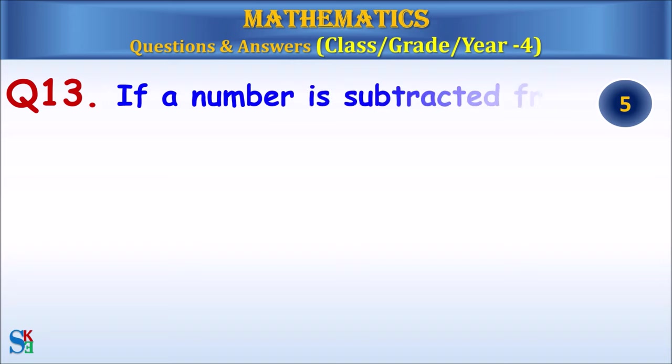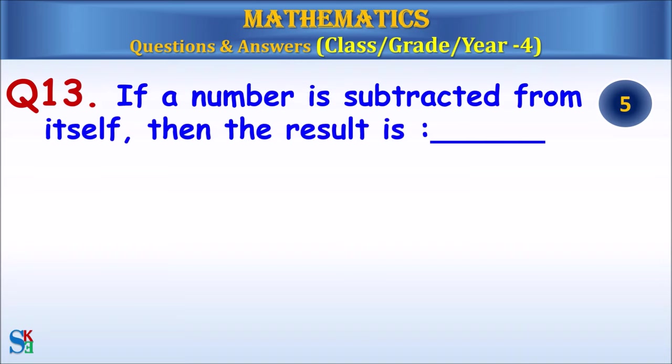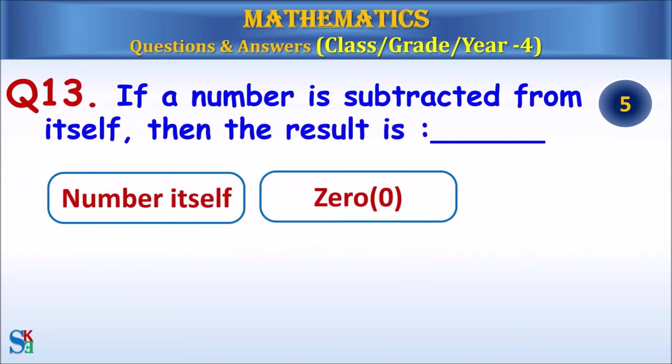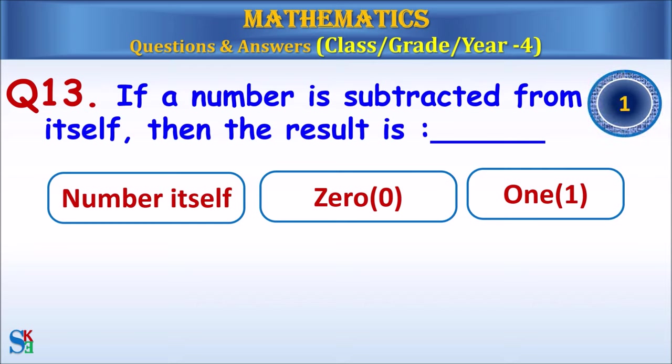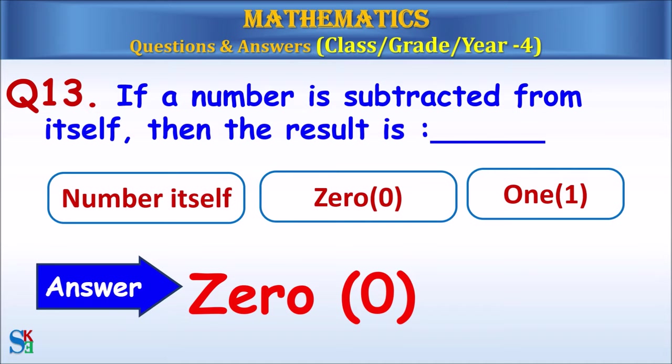Question 13: If a number is subtracted from itself, then the result is? The answer is 0.